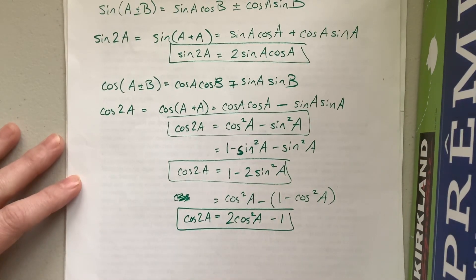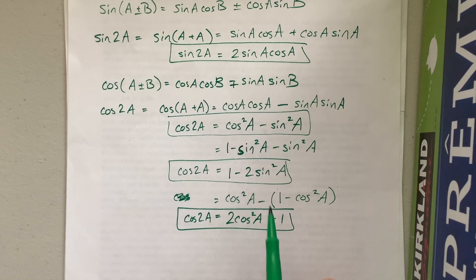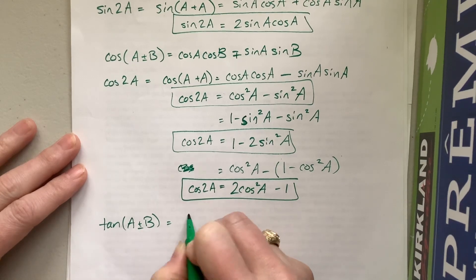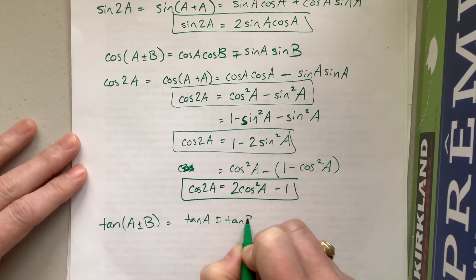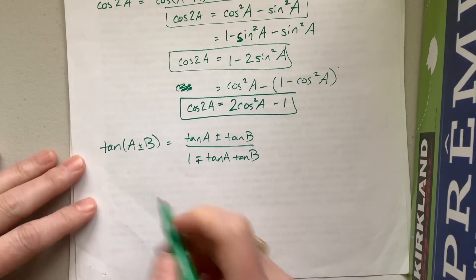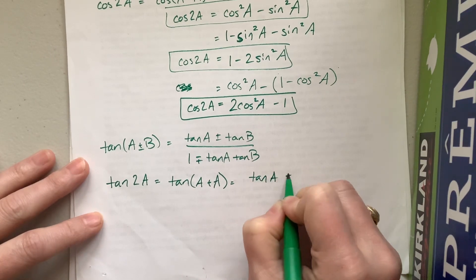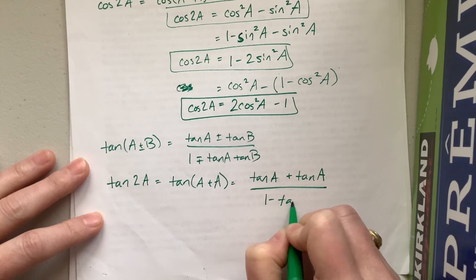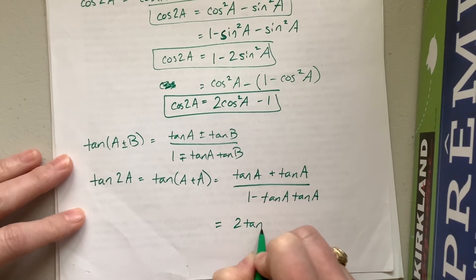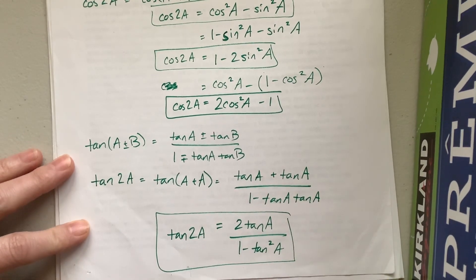So this distributes through, giving me 1 cosine squared and another positive cosine squared, so this is 2 cosine squared A minus 1. So what happens here with the cosine double angles is that we have three different versions, and depending on what we're given, we might pick one over the other. The tangent, tangent of A plus B is tangent A plus tangent B over 1 minus tangent A tangent B. So if I have tangent of 2A, that's A plus A, so this is tangent of A plus tangent of A, which is 2 tangent of A over 1 minus tangent squared of A.